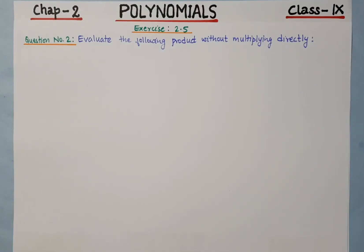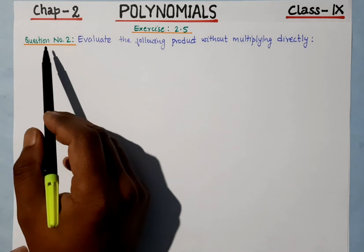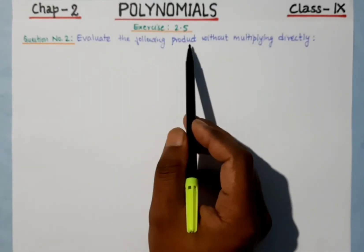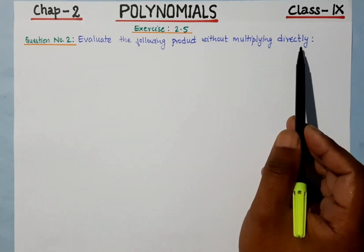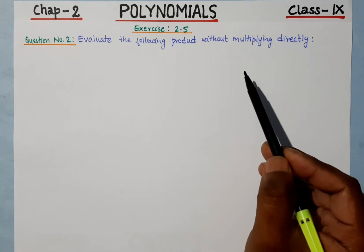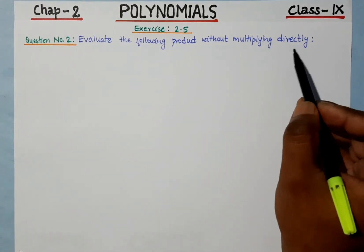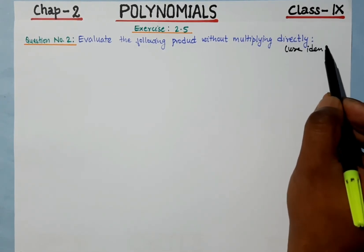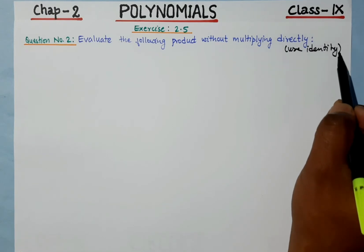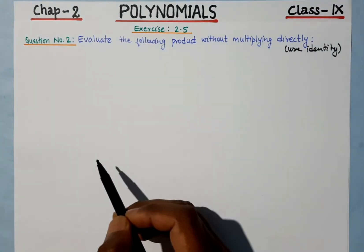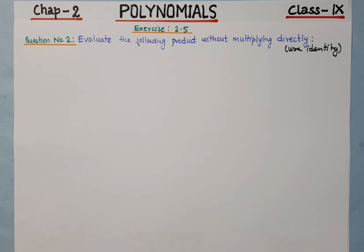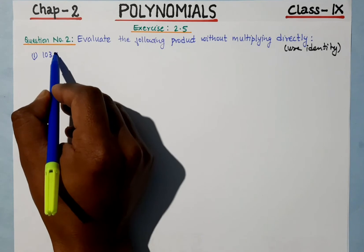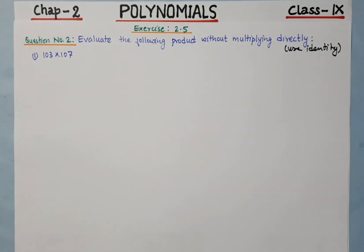Hello, my dear children, welcome to our math class. In this class, we will solve question number two from exercise 2.5. We will evaluate the following products without multiplying directly — that means we are going to use an algebraic identity.